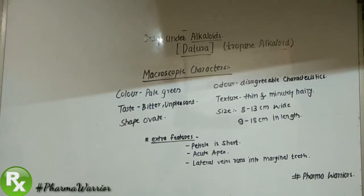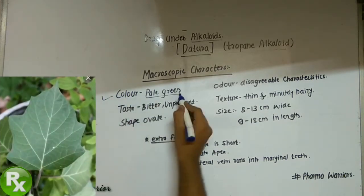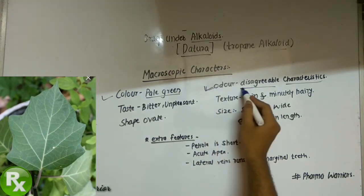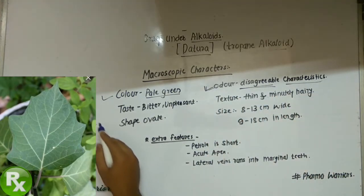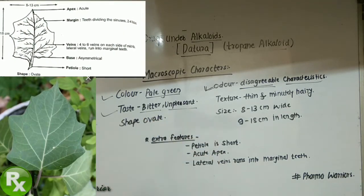Now we will look at the microscopical and morphological features of the Dhatura plant. The color is pale green, with a disagreeable or characteristic odor. The taste is bitter and unpleasant.